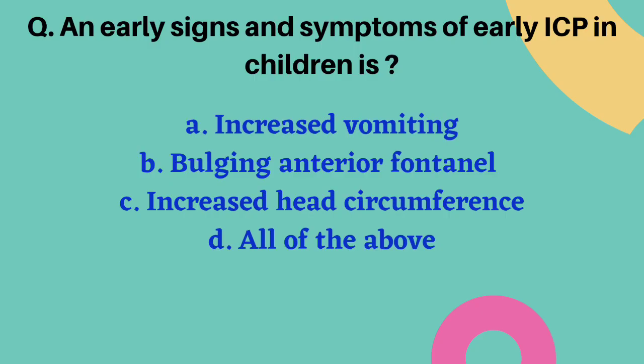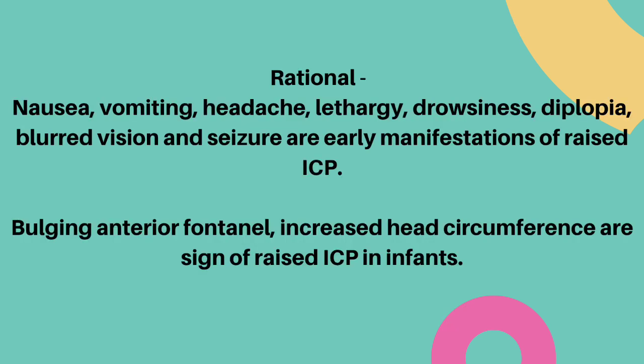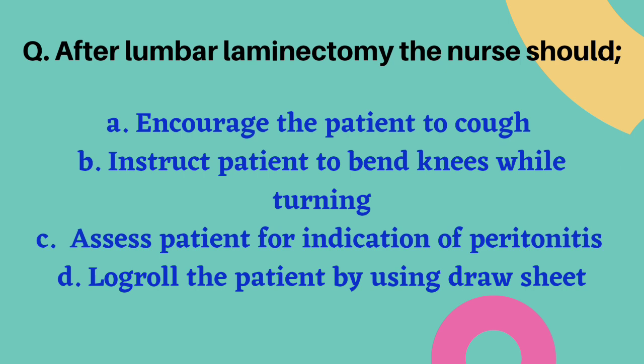The next question: what is an early sign and symptom of increased ICP in children? Options are increased vomiting, bulging anterior fontanel, increased head circumference, and all of the above. The correct answer is option A — increased vomiting. Other early manifestations in children include headache, lethargy, drowsiness, diplopia, blurred vision, and seizure. Bulging anterior fontanel and increased head circumference are signs of raised ICP specific to infants.